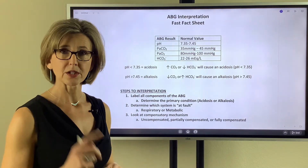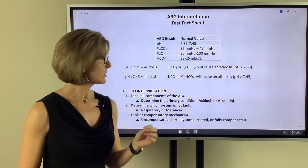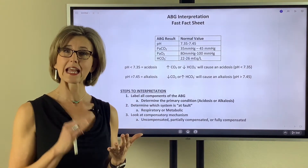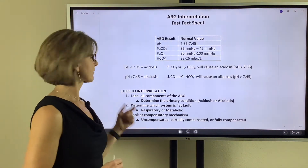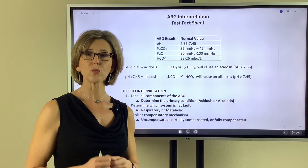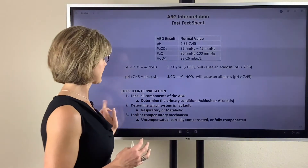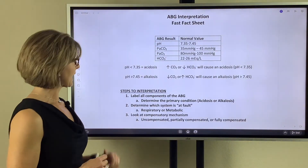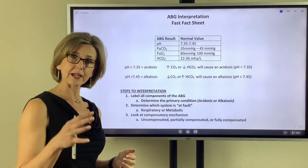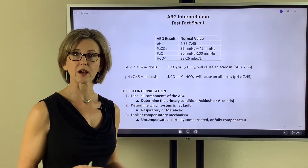Now we're ready to do the three simple steps. The first step: label all the components of your ABG — this lets you determine your primary condition. I label the components with both words and arrows. The second step is to determine which system is at fault. If the CO2 is causing the issue, we term it a respiratory problem. If the bicarb is causing the issue, we term it a metabolic problem. Once the system at fault is identified, we look for degree of compensation — whether the gas is uncompensated, partially compensated, or fully compensated.